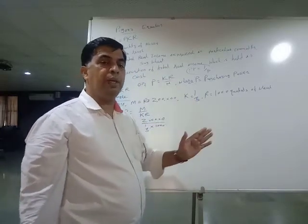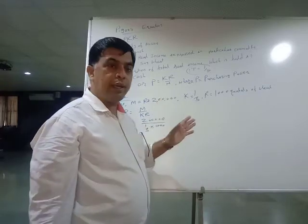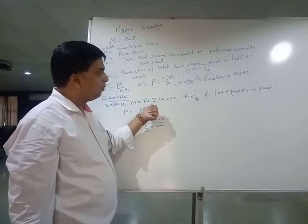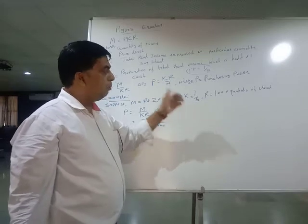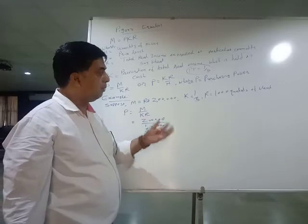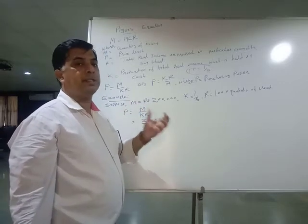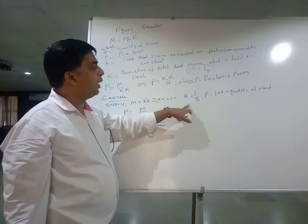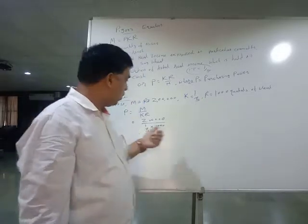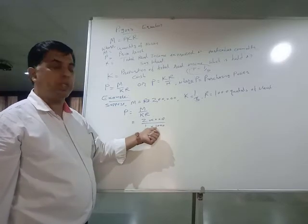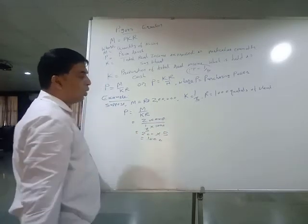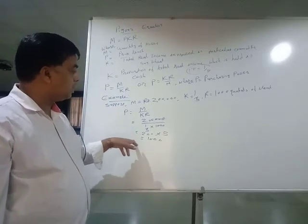Let us understand Pigou's equation with an example. Suppose at a particular point of time, total quantity of money is two lakh rupees in the economy. K is equal to one-fifth, meaning people want to keep one-fifth of their total real income in cash — that is twenty percent — which indicates demand for money. R is expressed as one thousand quintals of wheat.